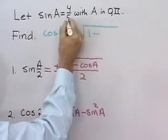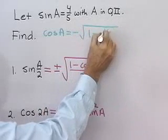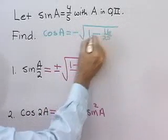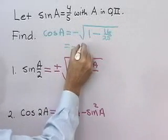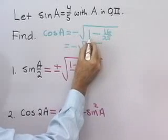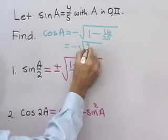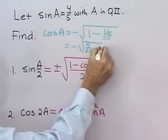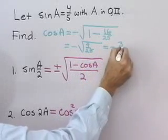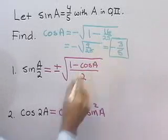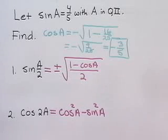1 minus sine squared. Well, sine squared is 16 twenty-fifths, so that's minus square root 25 twenty-fifths minus 16 twenty-fifths is going to be 9 twenty-fifths. And just as you'd expect, this comes out three-fifths. You probably knew that it was going to be that anyways. So, that comes out negative three-fifths.